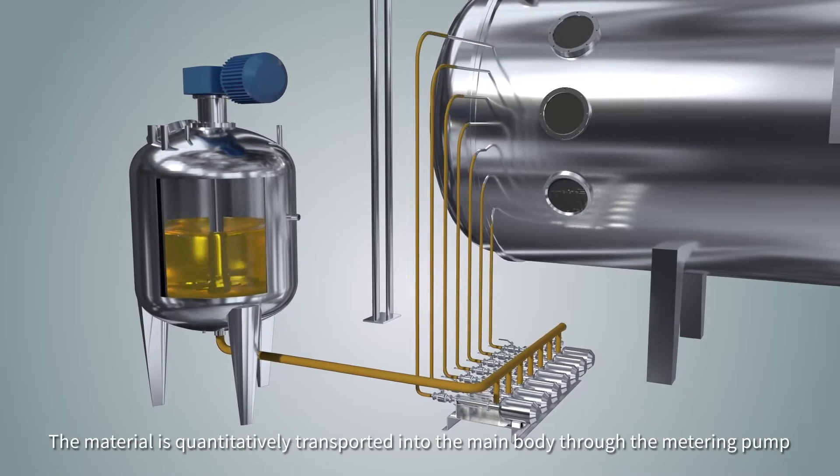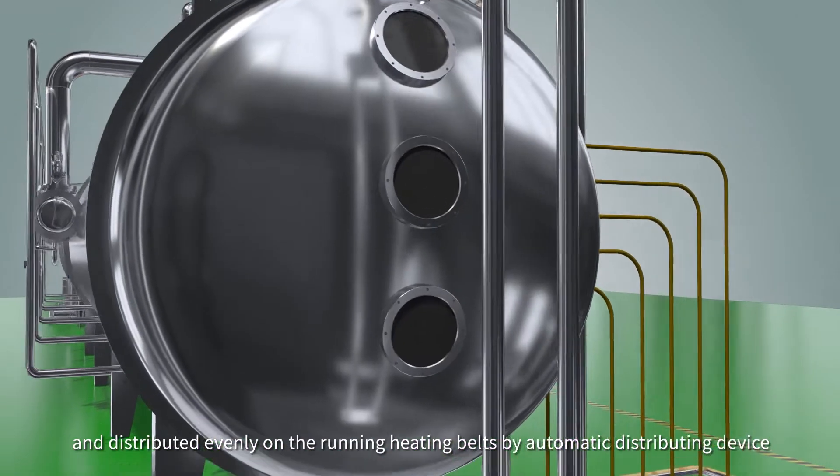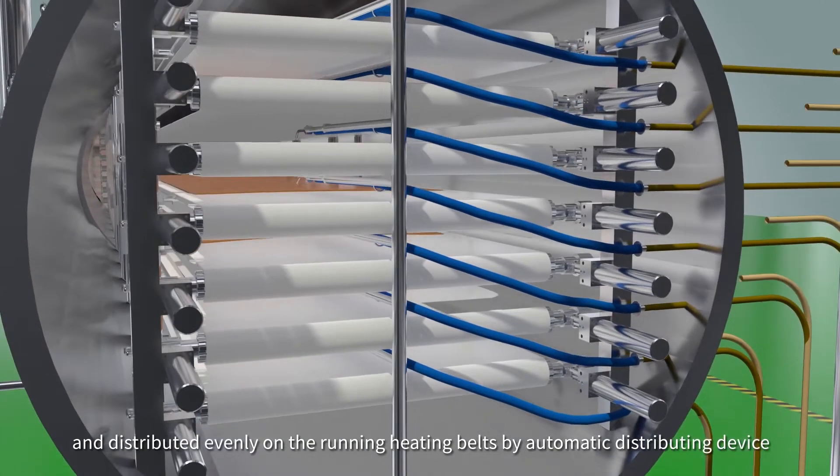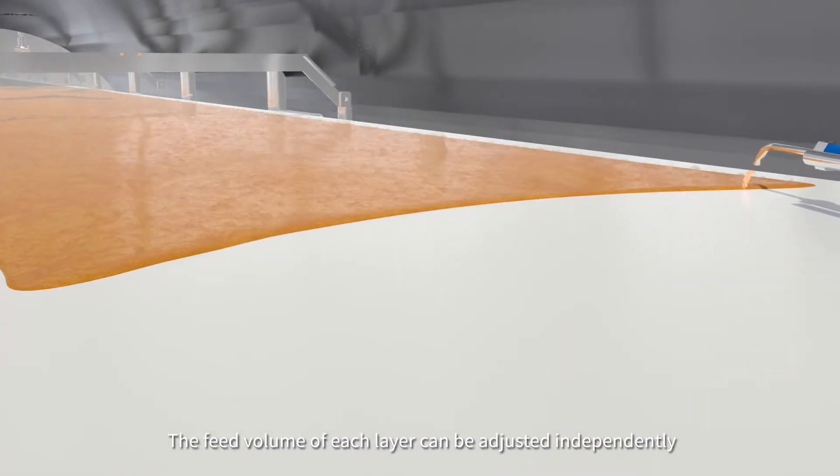The material is quantitatively transported into the main body through the metering pump and distributed evenly on the running heating belts by automatic distributing device. The feed volume of each layer can be adjusted independently.